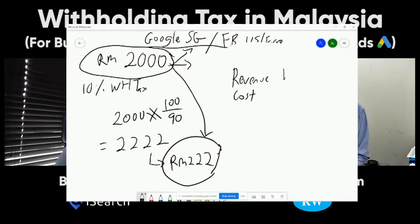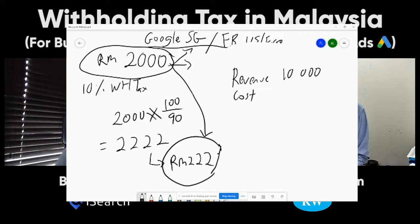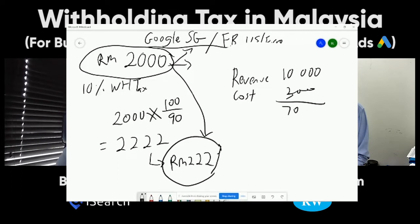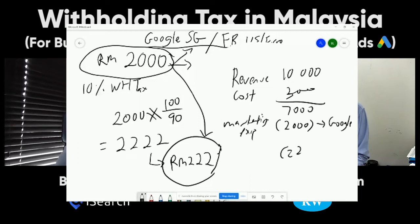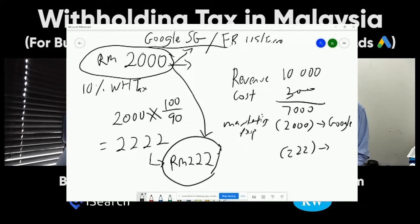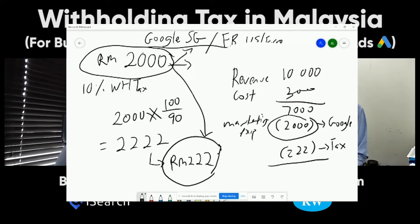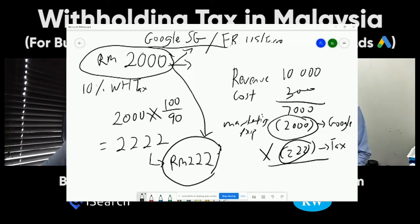Let's do an example. Revenue is 10,000, costs are 3,000 — leaving 7,000. The marketing expense of 2,000 for Google ads is allowable. They also need to pay 222 to LHDN — that's the withholding tax. So the 2,000 can be claimed as a tax deduction, but the 222 cannot. You can record it as an expense, but when you do your tax computation, you have to add it back as non-allowable.